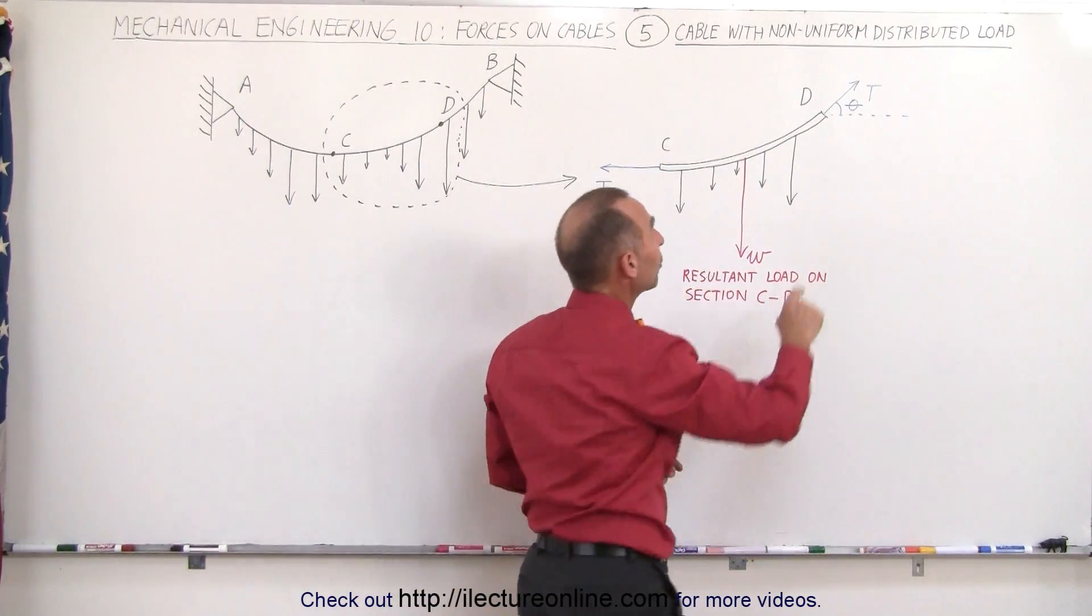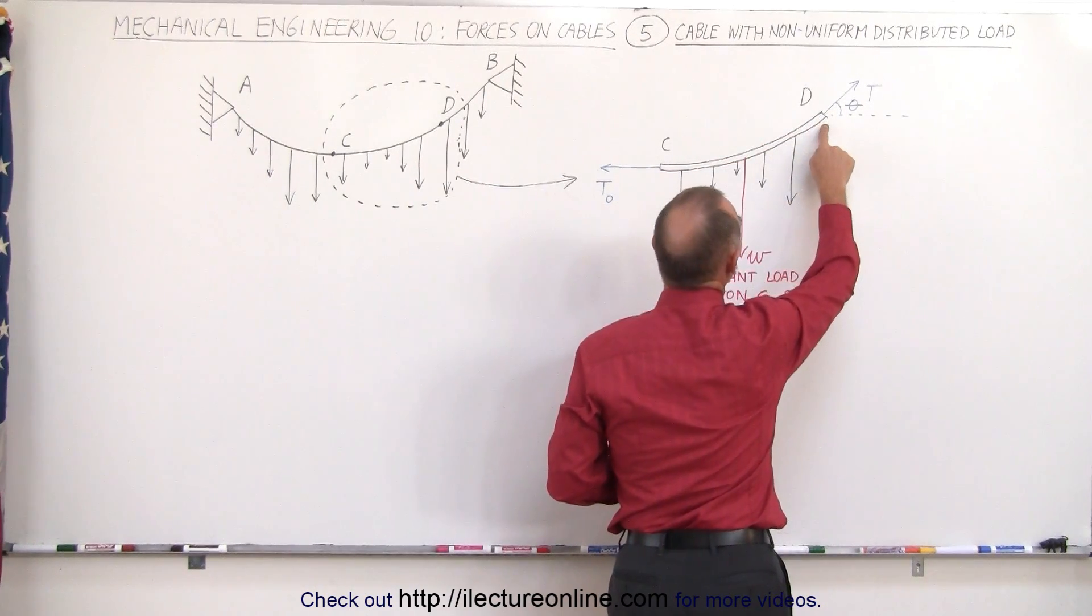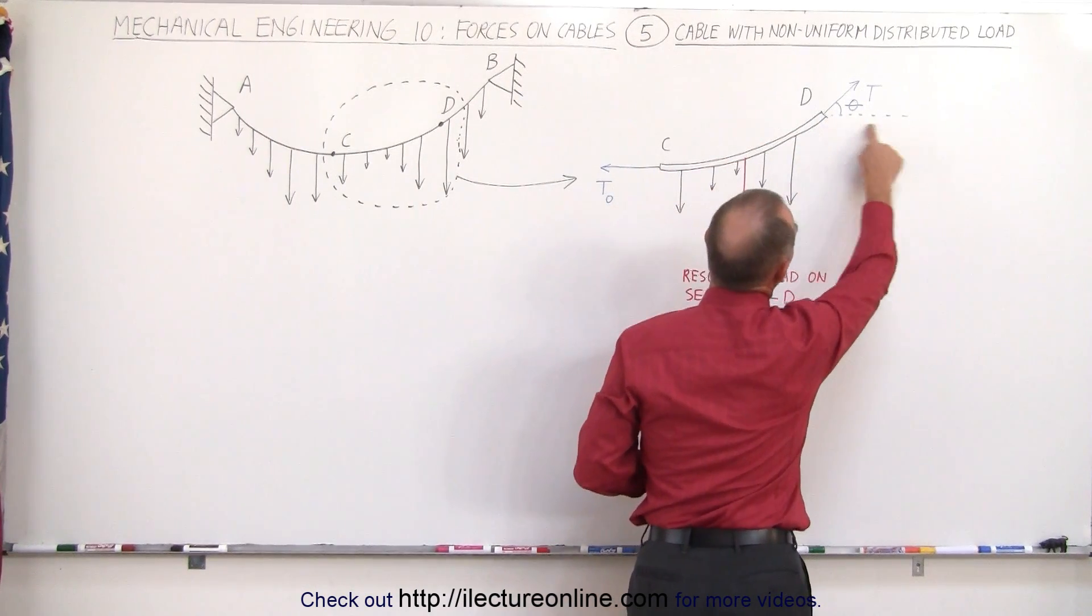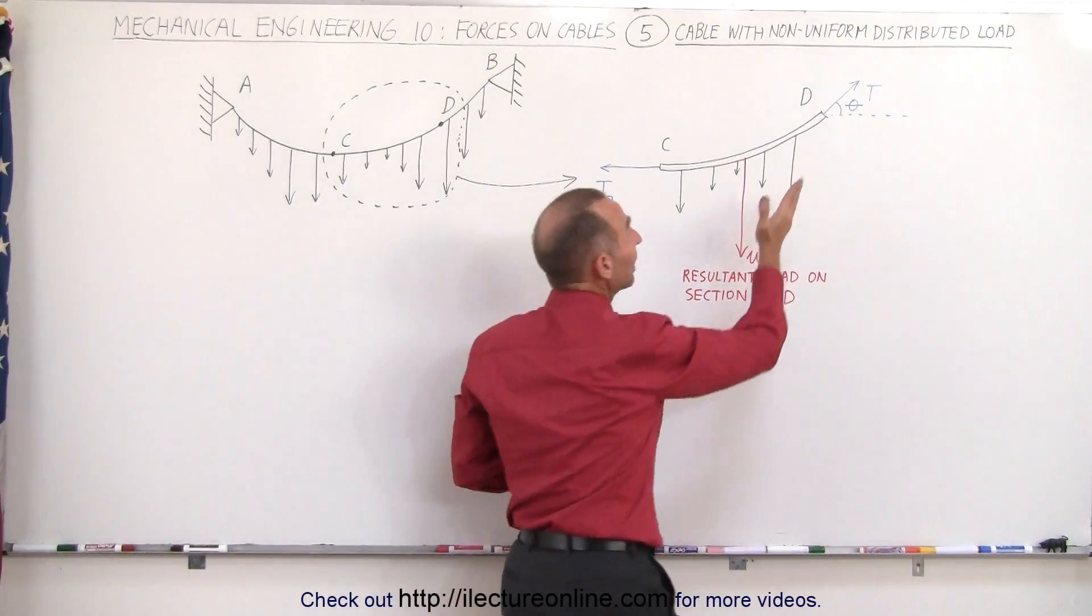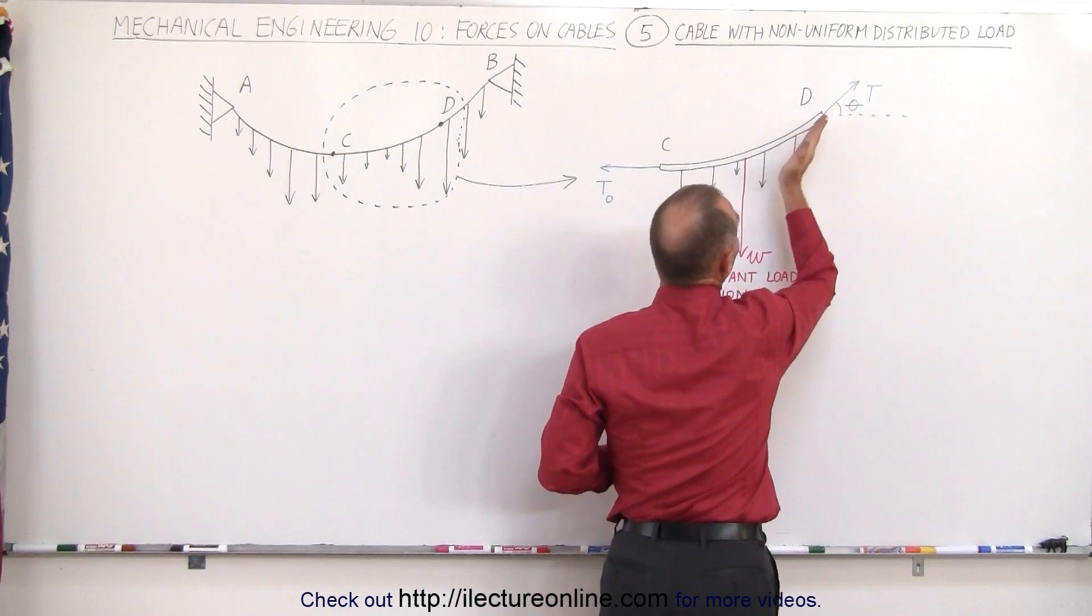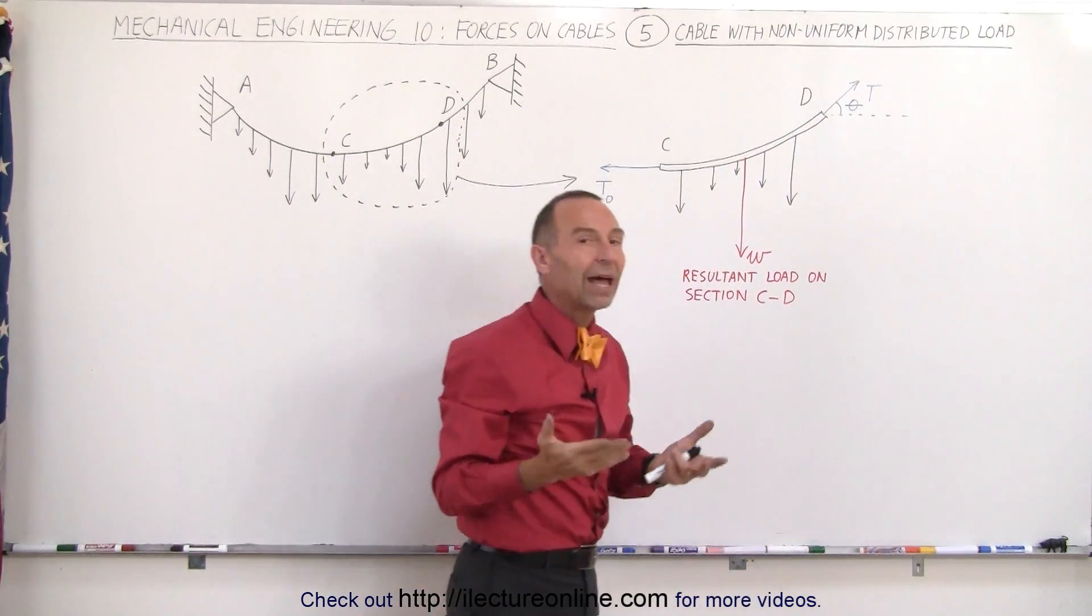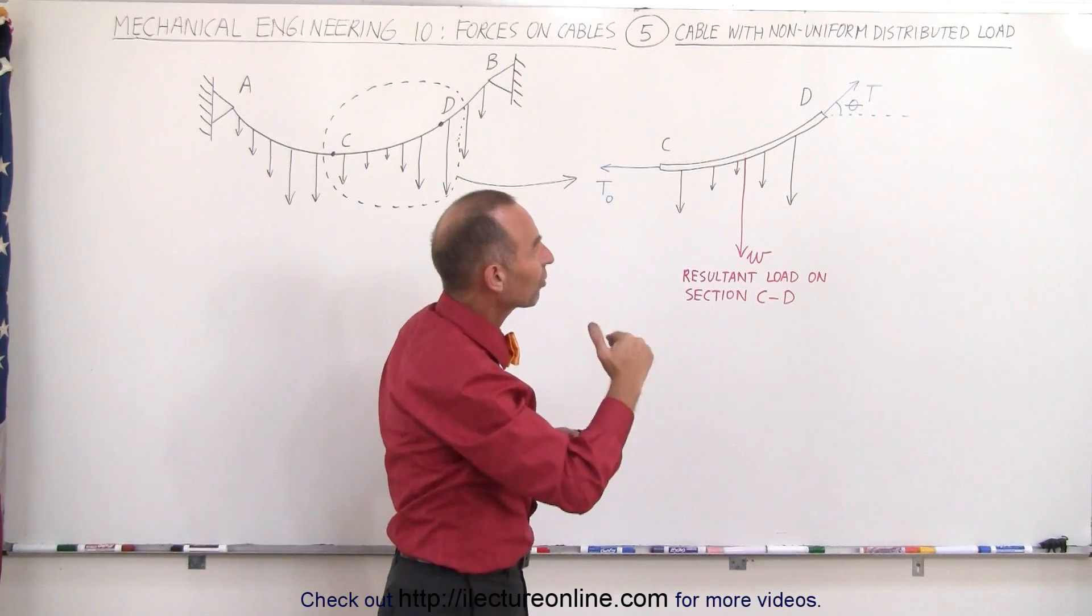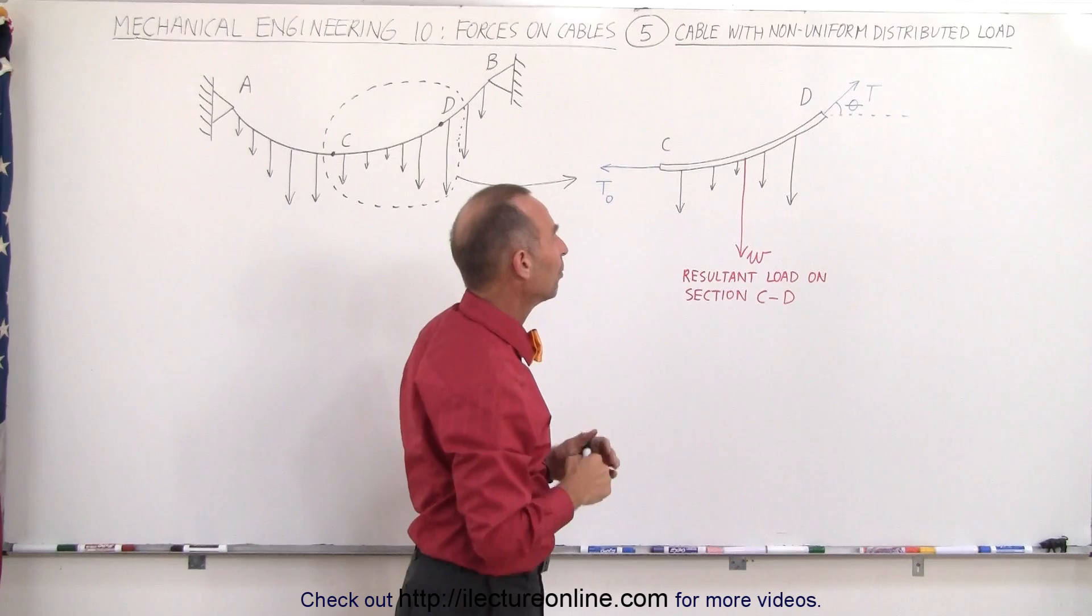Also note that when we get to some other point besides the lowest point on the cable, there always will be an angle between the horizontal line and the direction of that cable at that point. And therefore, since we know that the tension is in the same direction as the cable at that particular point, then we have the same angle between the horizontal line and the tension on the cable at that particular point D.